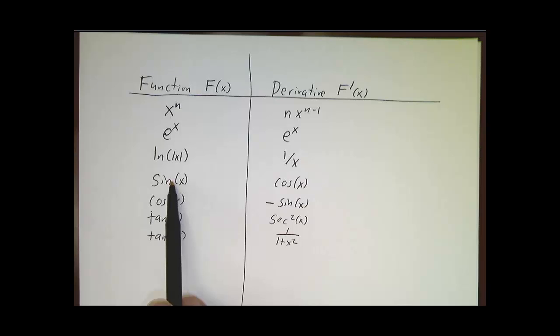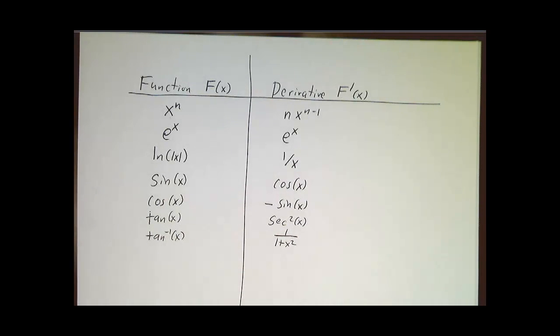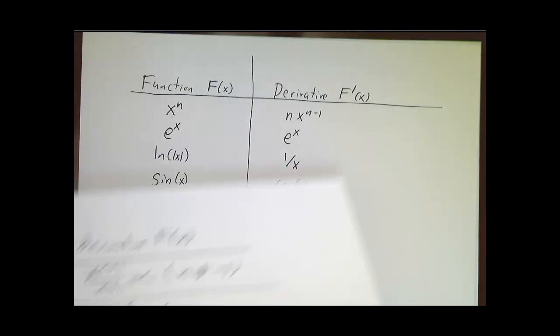So go down the list. Sine, cosine, cosine, minus sine, and so on. So the main technique we have for finding antiderivatives is just take this table and flip it.